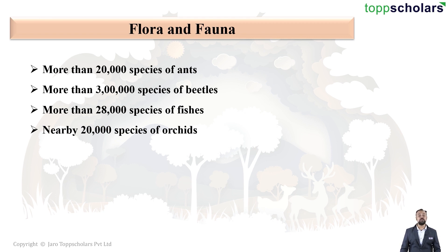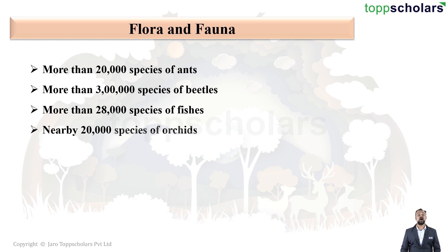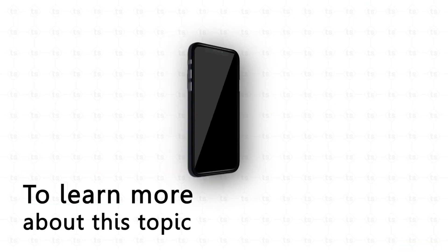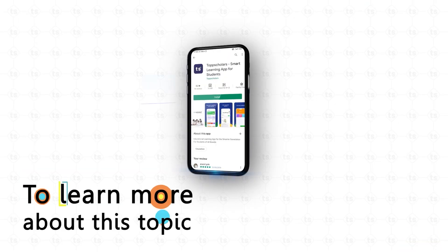There are nearly 20,000 species of orchids. These are just the numbers of a few types of organisms — just imagine the amount of biodiversity we have on our planet. It is said that millions and millions of species are yet to be discovered.